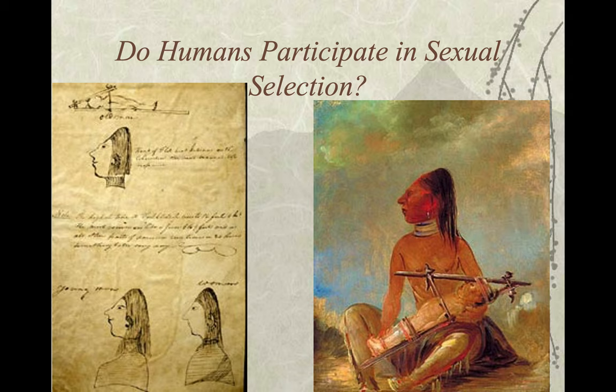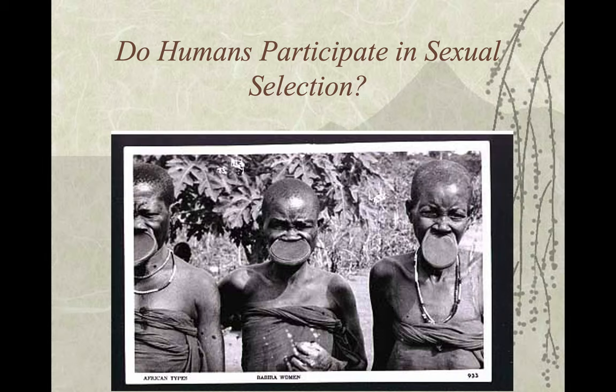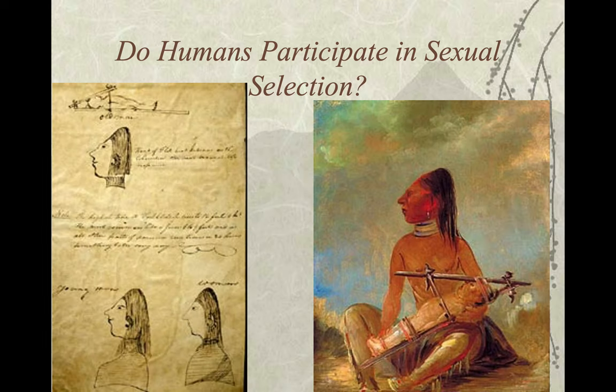Sexual selection — it made them look intelligent and attractive. Only people with cone heads were able to get married. Only people with small feet were able to get married. Only women with that plate in their mouth were able to get married.